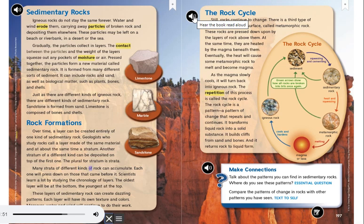Many strata of different kinds of rock can accumulate. Each one will press down on those that came before it. Scientists learn a lot by studying the chronology of layers. The oldest layer will be at the bottom, the youngest at the top. These layers of sedimentary rock can create dazzling patterns. Each layer will have its own texture and colors. Moreover, water and wind will continue to do their work.